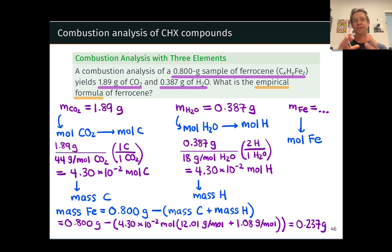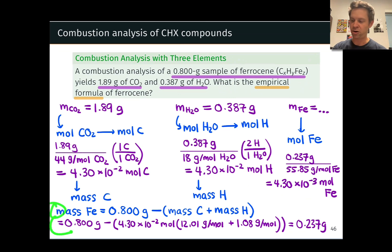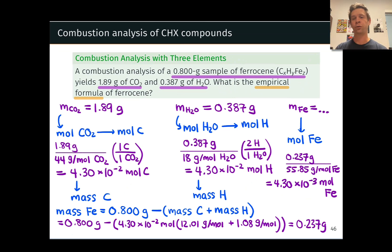Now we can find the moles of iron straightforwardly by dividing by the average atomic mass of iron from the periodic table. We take the 0.237 grams of iron and divide by the molar mass of iron, giving us the number of moles of Fe. Everything we did starting from finding the iron mass is unique to these CHX three-element combustion analysis problems — the third element's mass comes from applying conservation of mass to the sample. We end up with 4.3×10⁻³ moles of iron.